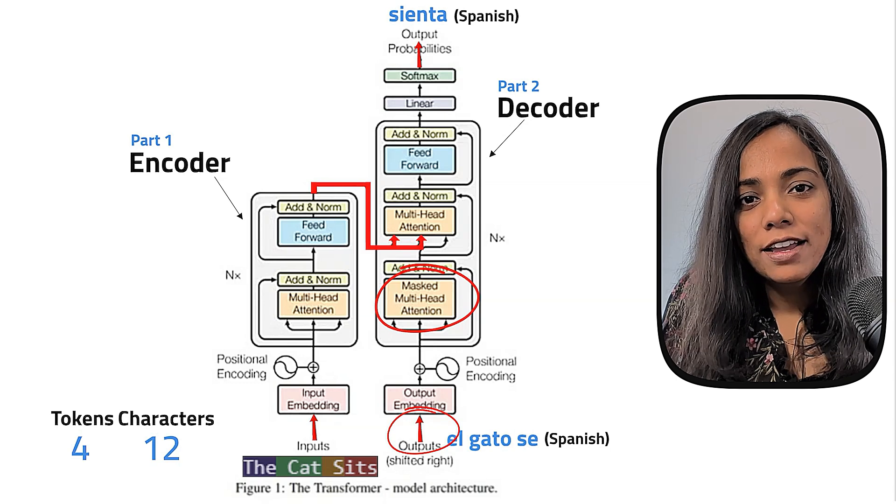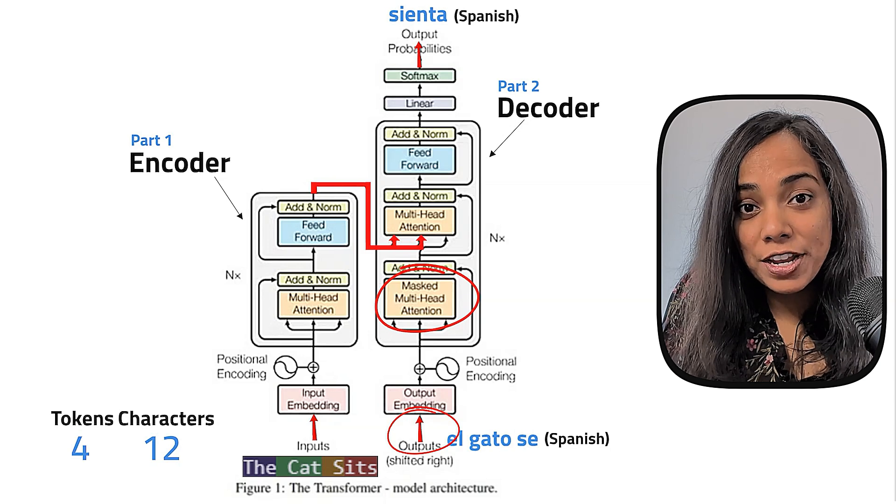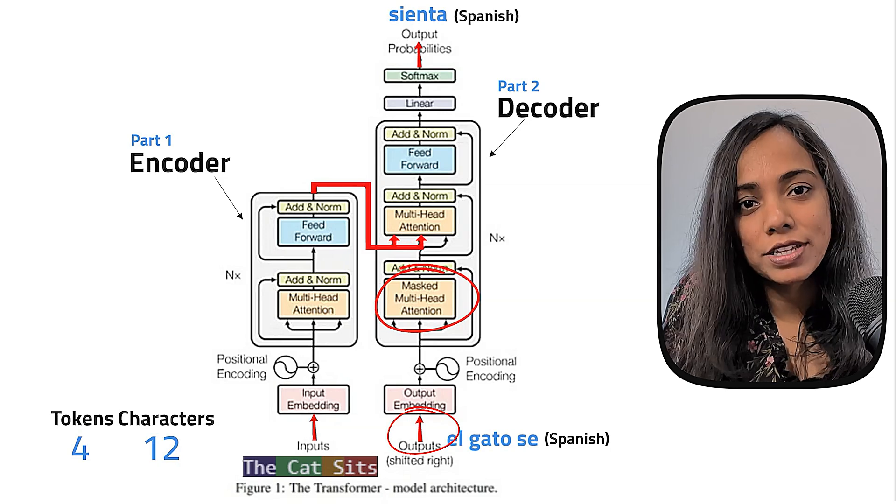So this should kind of answer the question of why there is an input arrow at the decoder. This arrow essentially shows us that the output that is generated by the decoder is fed back to it with a lag. So it has an autoregressive nature to it.